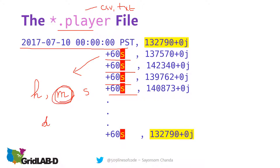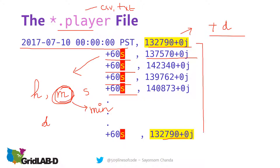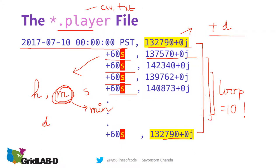The values in the player file can be in the form of angles if you're modifying voltages in polar form, and they can also be integers, floats, or any other type supported by C++ or GridLabD. The first and last timestamps usually match in a player file. If you want the same player file to act on an object n number of times, give an integer value — for example, 10 — to run it 10 times in the loop.